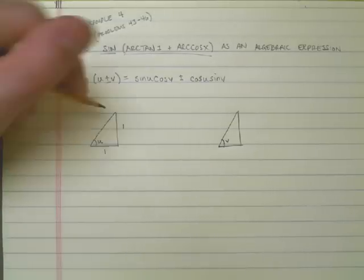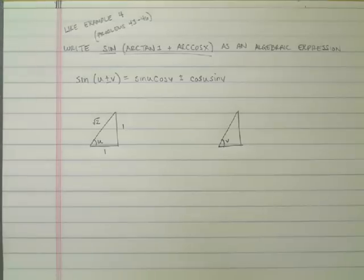That also means that I have the square root of 2 as my hypotenuse. Other things that I should recognize by this point in the class, you should understand that u is a 45 degree angle then.